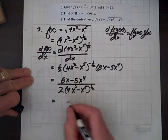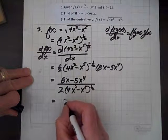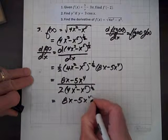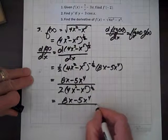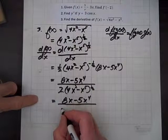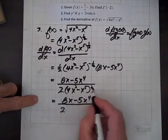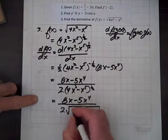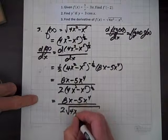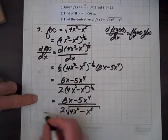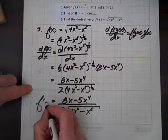Well, we can simplify further. And we'll have an 8x minus 5x to the fourth. And downstairs we'll have our friend 2. And in place of parentheses in that exponent one-half, we'll have a square root symbol. And inside that we have 4x squared minus x to the fifth. And there it is, f prime of x. We've done it.